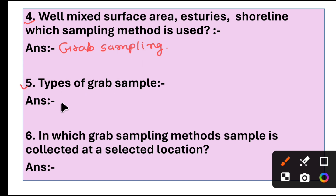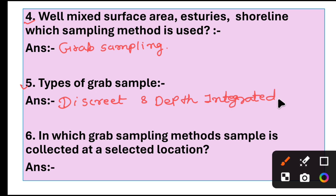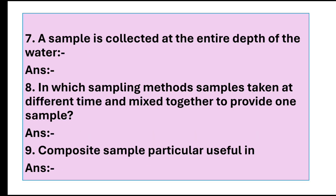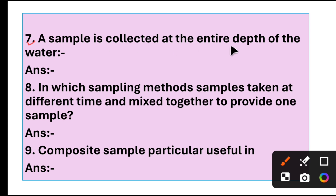Question 5: Types of grab sample — two types: discrete and depth integrated. Question 6: In which grab sampling method is a sample collected at a selected location? Answer: In discrete grab sampling method, sample is collected at a specific selected location. Question 7: A sample collected at the entire depth of the water. Answer: Depth integrated.